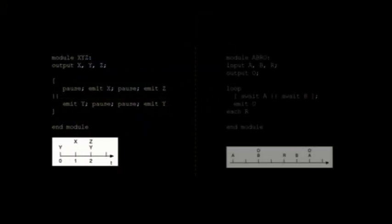A more interesting example illustrates waiting for the occurrence of two signals A and B simultaneously, or one before the other, at which point the output signal O is emitted. This is in an infinite loop which is restarted each time the signal R is detected. The await statement and the loop-each statement are derived statements that have embedded pause statements within them.